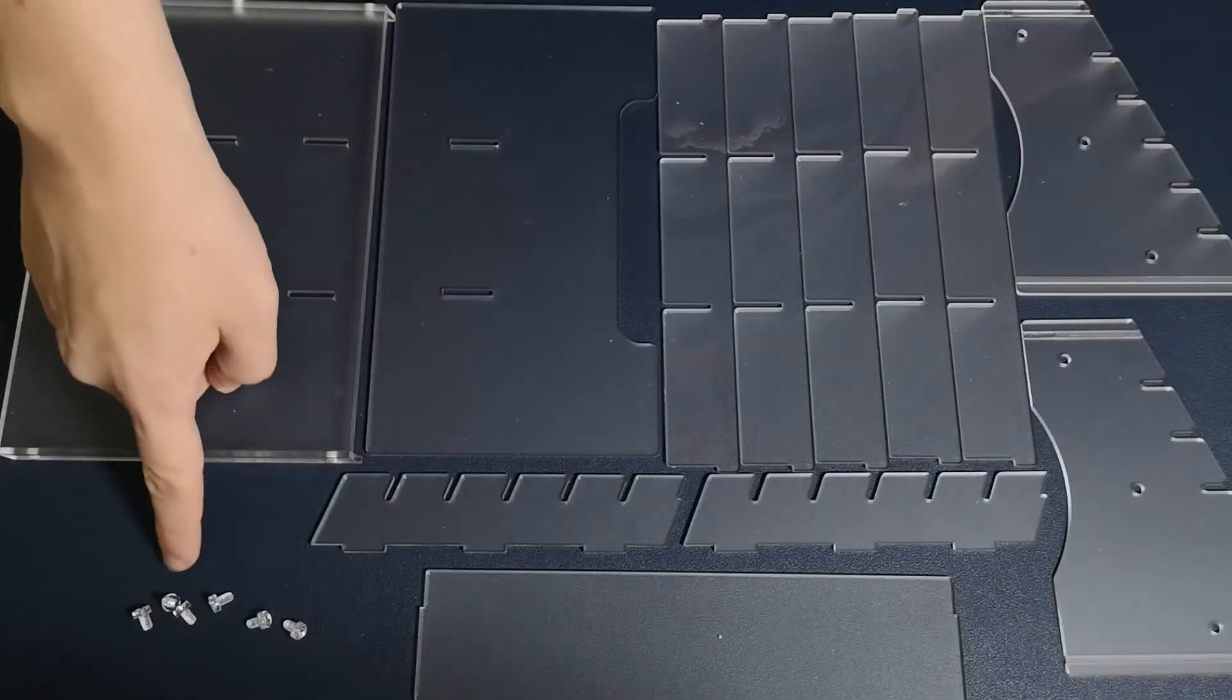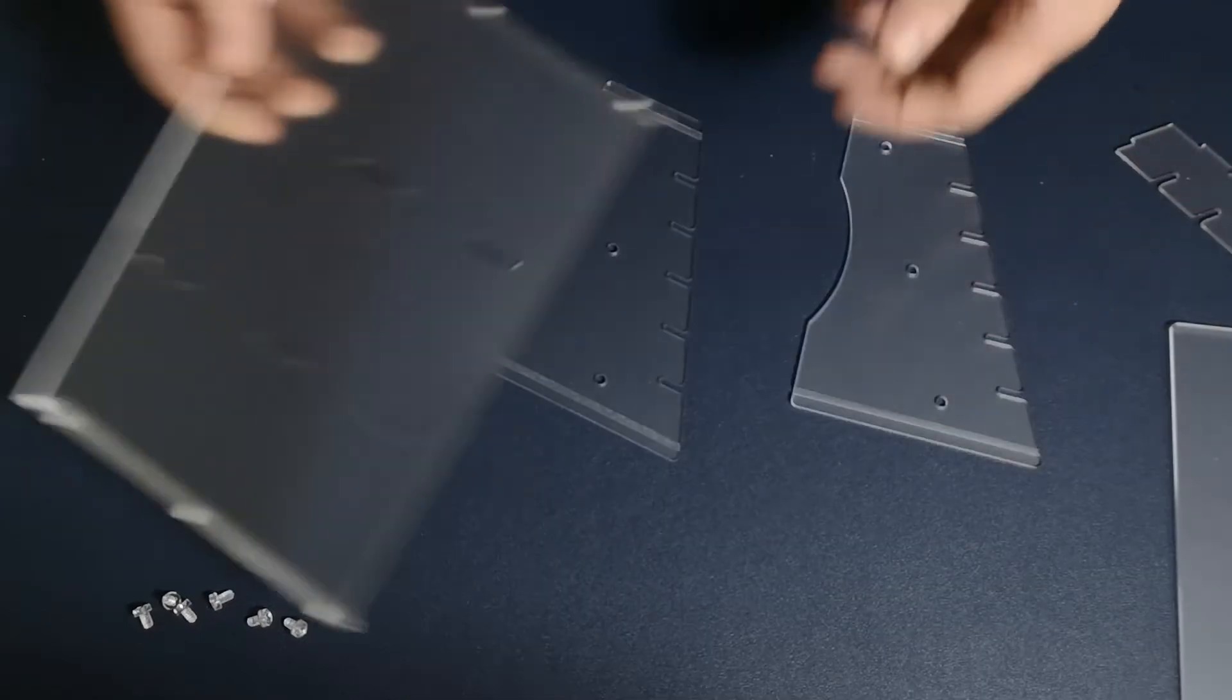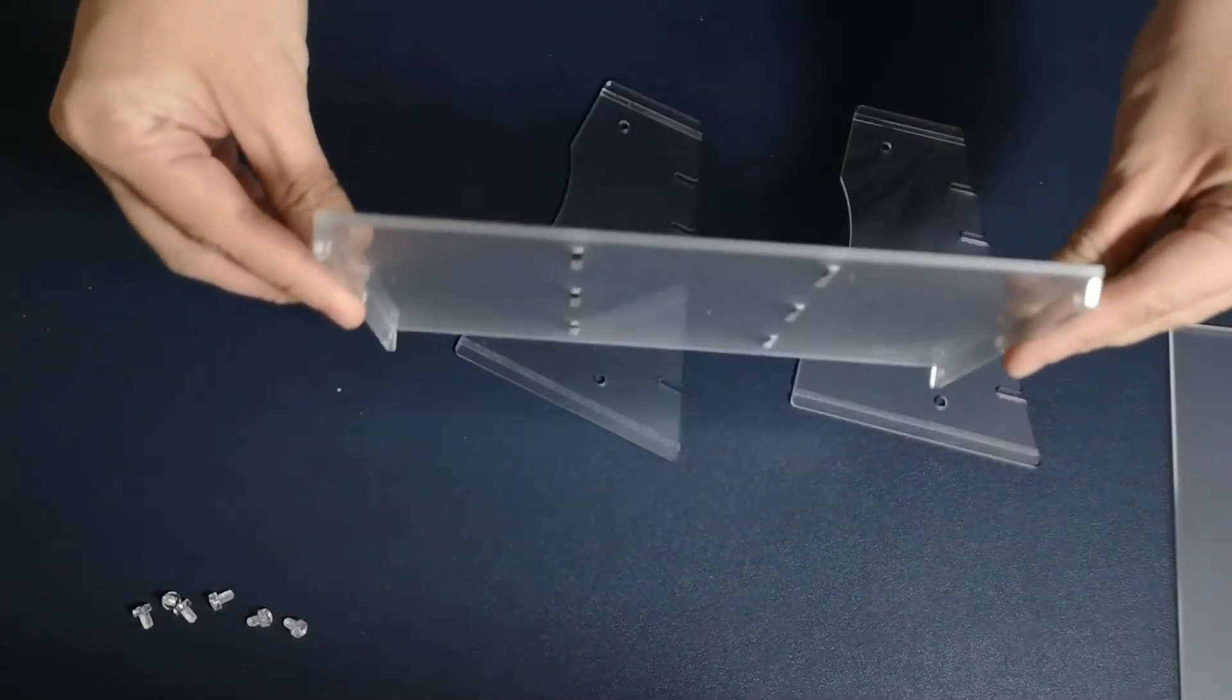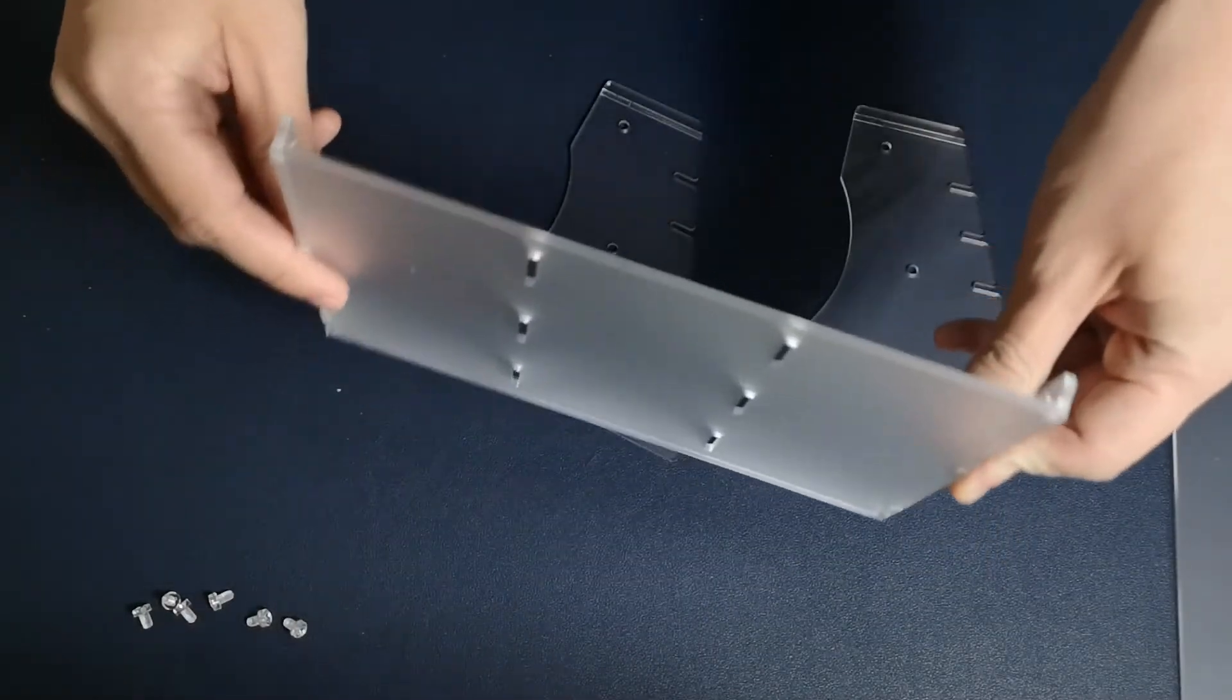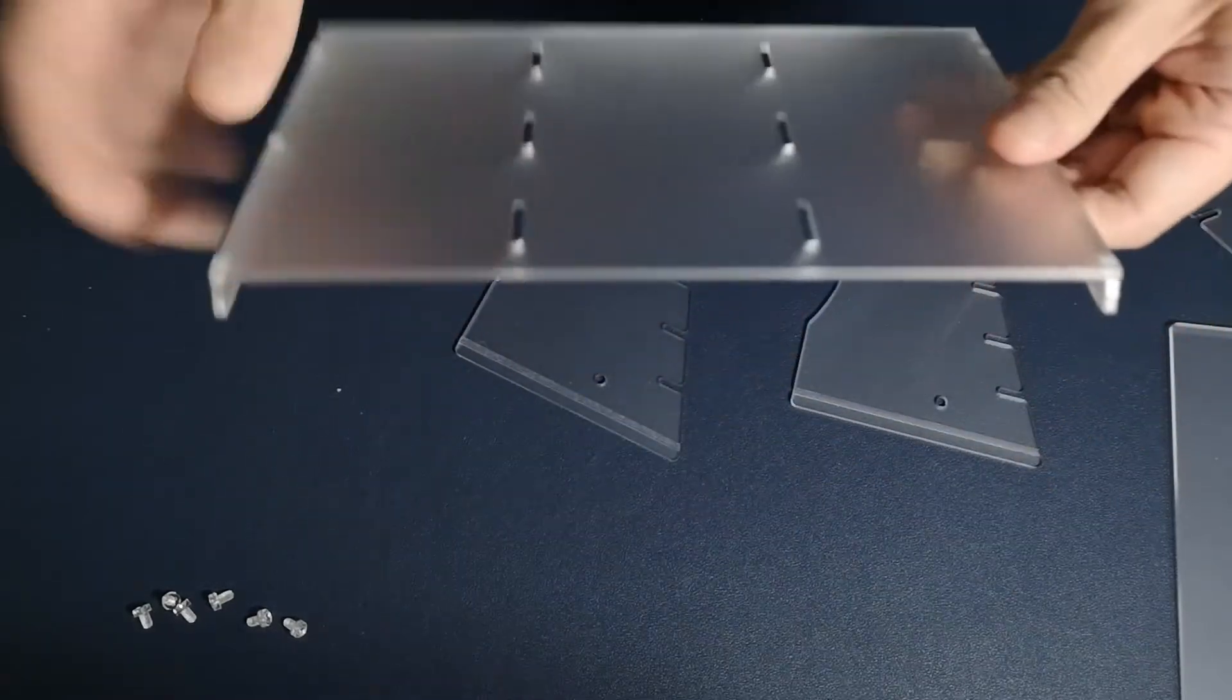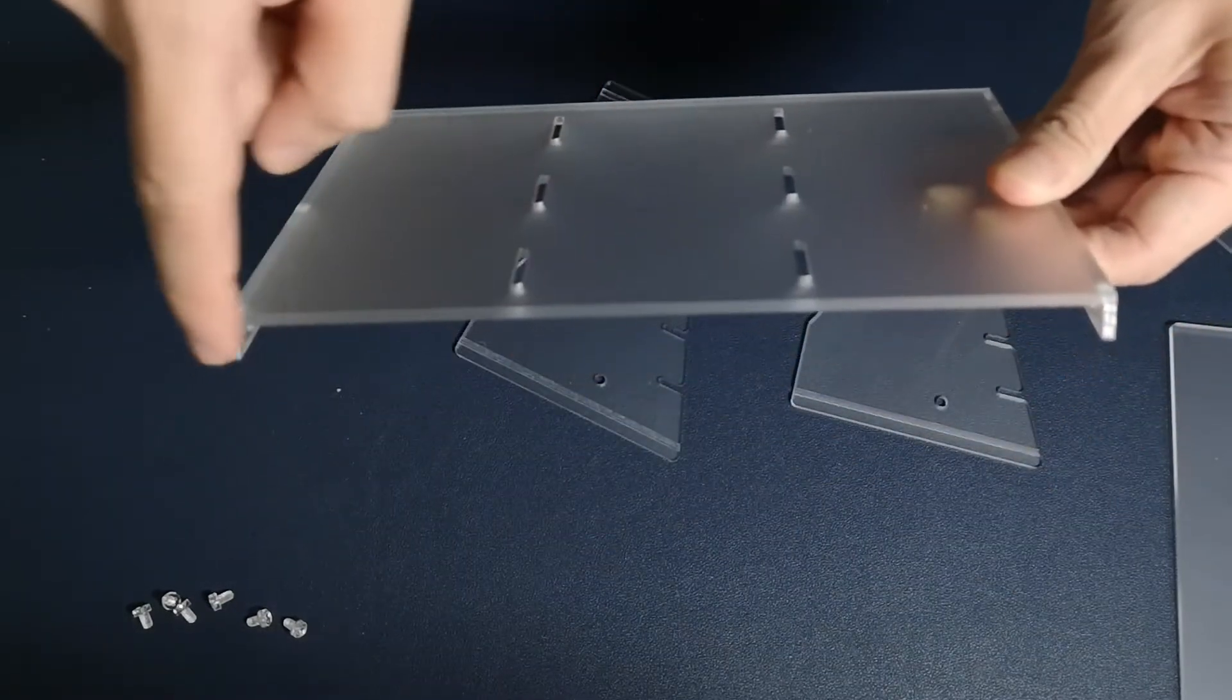Six acrylic screws are provided and you will need a regular Phillips head screwdriver. Starting with the bottom base panel, make sure the two protruding pieces are facing downward.